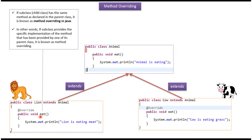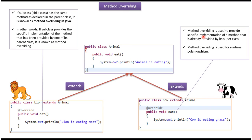If a subclass has the same method as declared in the parent class, then it is known as method overriding. So in this case Animal is the super class — it has an eat method — and the same eat method is there in the Lion class, so this is an example of method overriding. In other words, if a subclass provides a specific implementation of a method that has been provided by one of its parent classes, then it is also known as method overriding.